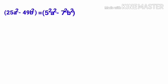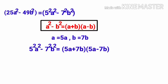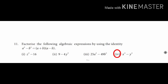Subdivision 3: 25a squared minus 49b squared. Applying the identity a squared minus b squared equals a plus b into a minus b, where a equals 5a and b equals 7b: 5 squared a squared minus 7 squared b squared equals 5a plus 7b into 5a minus 7b. So the answer is 5a plus 7b into 5a minus 7b. Subdivision 4 is homework for you.